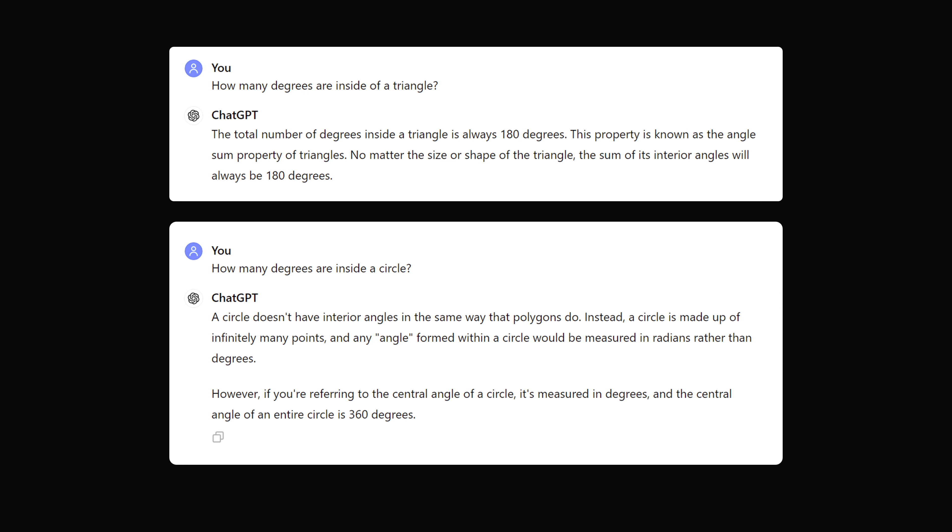I then pose the question, how many degrees are inside a circle? A circle does not have interior angles in the same way that polygons do. Instead, a circle is made up of infinitely many points, and any angle formed inside a circle would be measured in radians rather than degrees. However, if you're referring to the central angle of the circle, it's measured in degrees, and the central angle of an entire circle is 360 degrees.